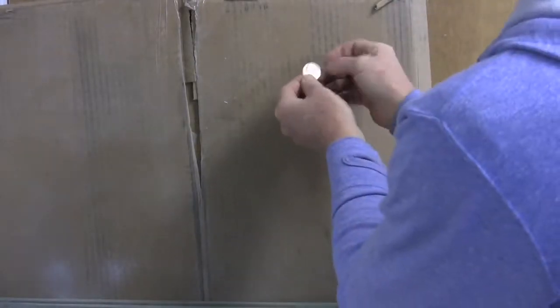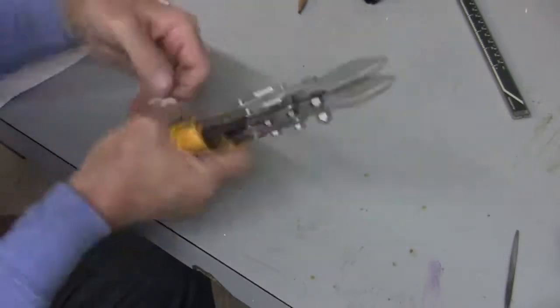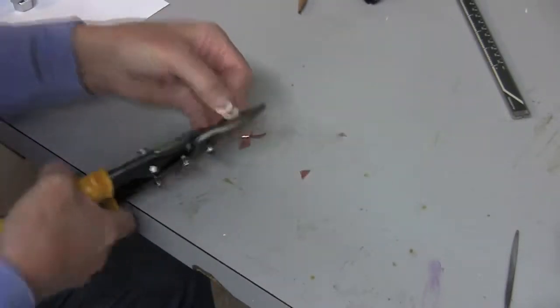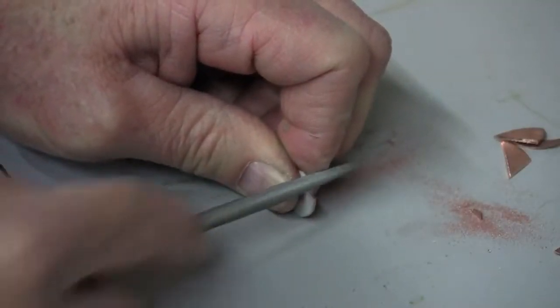Putting a little spray adhesive on our template and sticking it to the piece of copper. And then I'll just take the set of tin snips and cut it down basically to size. And once I'm close, I'll file it right up to our template.